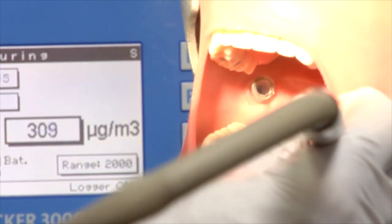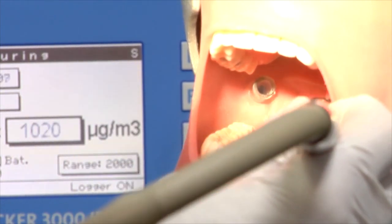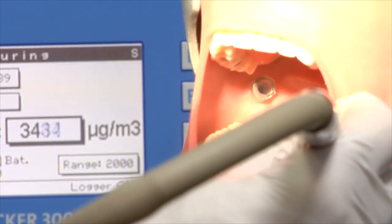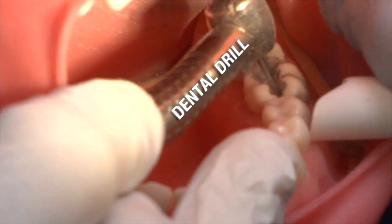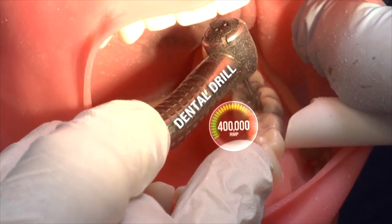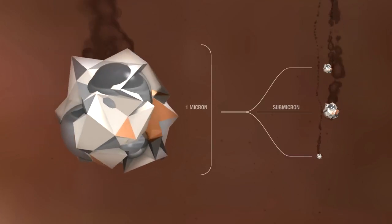When a dentist goes in to grind out an amalgam filling, he is creating tremendous quantities of mercury particulate. Their dental drill runs at about 400,000 rpm and sends a shower of micron size and sub-micron size particles everywhere. It's tens of thousands of parts per million.